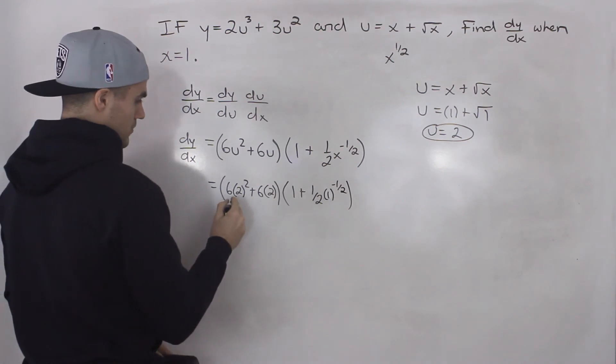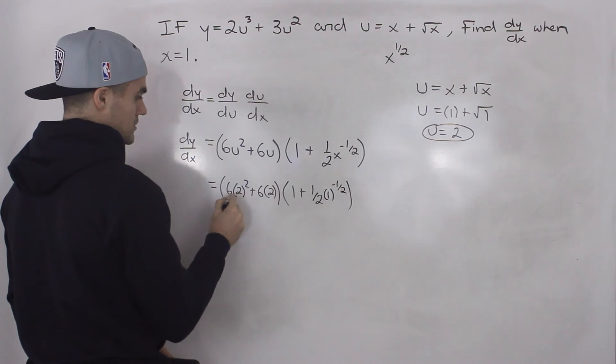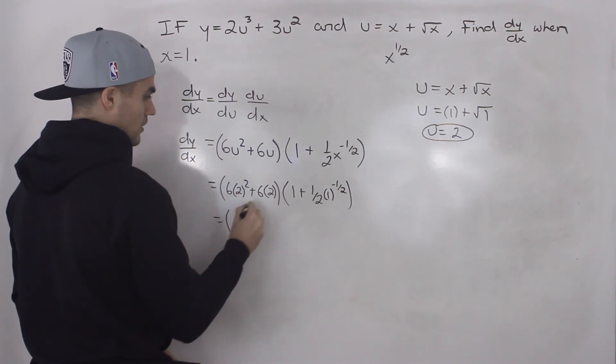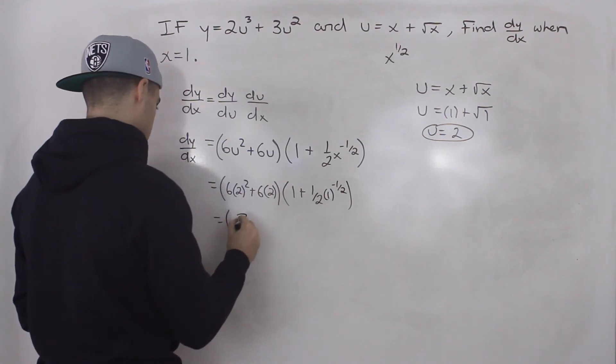So here we would have 6 times 4, 2 squared is 4, times 6 is 24. This would be 12, 24 plus 12 is 36.